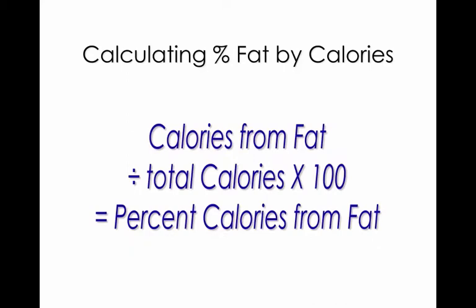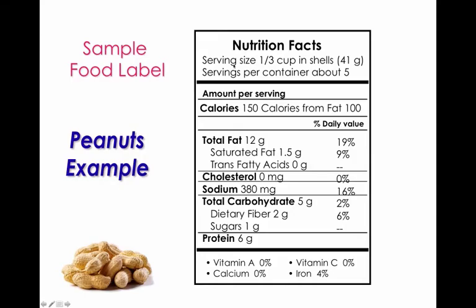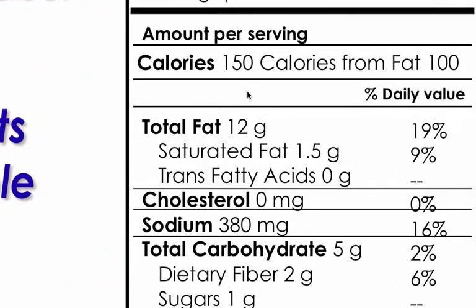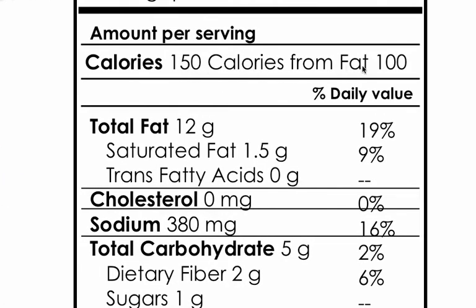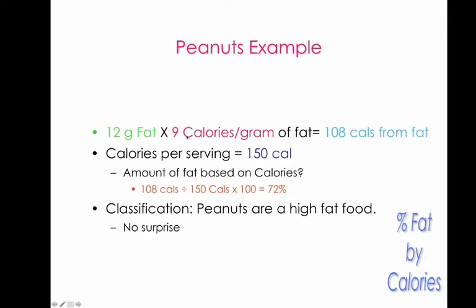How do you calculate percent fat by calories? If you're looking at a particular label — in this case peanuts — the serving size is a third of a cup in shells, total calories are 150, and fat calories are 100. We're going to use 12 grams of total fat, multiply it by 9 calories per gram of fat, and we get 108 calories from fat. We divide 108 by 150 total calories times 100, and that gives us 72%. So 72% of the calories in a third of a cup of shelled peanuts comes from fat — we'd classify peanuts as a high fat food, not really a surprise.